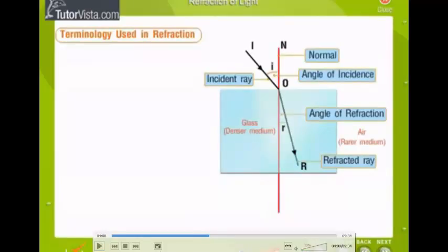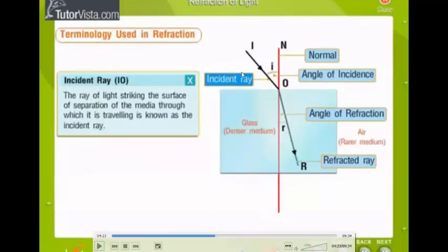Right, so let's look at these definitions. The incident ray. The incident ray is the ray of light that is striking the surface of separation. In other words, it is striking the surface between the two different optical media. So that's the incident ray. Easy peasy.